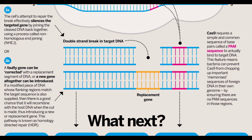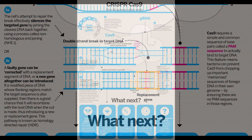Once the target segment of DNA has been excised, two processes could then be used to correct the target gene. First, by a process called non-homologous end-joining, the cell attempts to repair the cleaved DNA. However, because the sequence is interrupted and unlike the excised sequence, the gene is silenced and therefore is not expressed. In the second process, homology directed repair, the end sequence of the DNA replacement is the same as the end sequence of the excised DNA, giving a good chance that the DNA will recombine and be expressed in the form of a new gene.